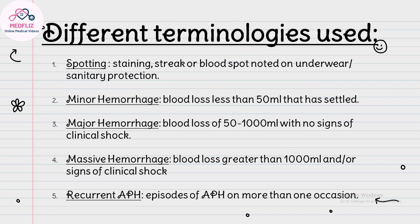APH is categorized into: spotting, minor hemorrhage, major hemorrhage, massive hemorrhage, and recurrent APH. Spotting is a streak of blood noted on underwear or sanitary protection. Minor hemorrhage is blood loss less than 50 ml. Major APH is blood loss of 50 to 1000 ml with no signs of clinical shock. Massive hemorrhage is blood loss greater than 1000 ml or with signs of clinical shock.